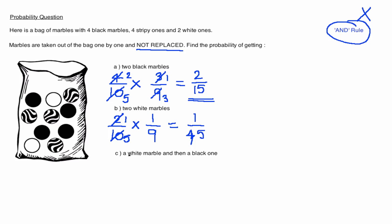In part C when you read this very carefully you can see that they have given us the order in which the probability occurs. First we get a white marble and then we get a black one. The probability of getting a white marble to begin with is 2 out of 10, similar to part B.